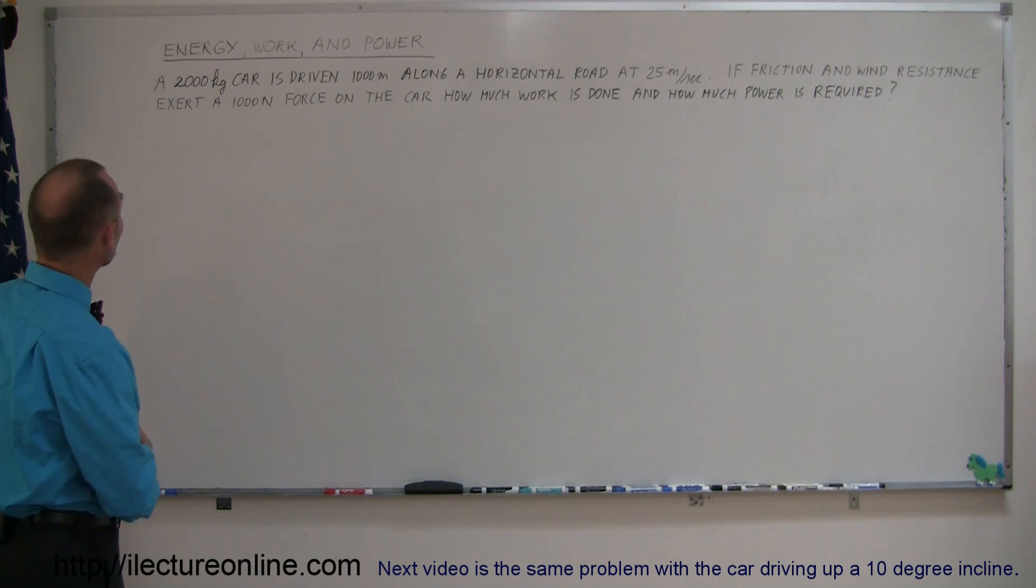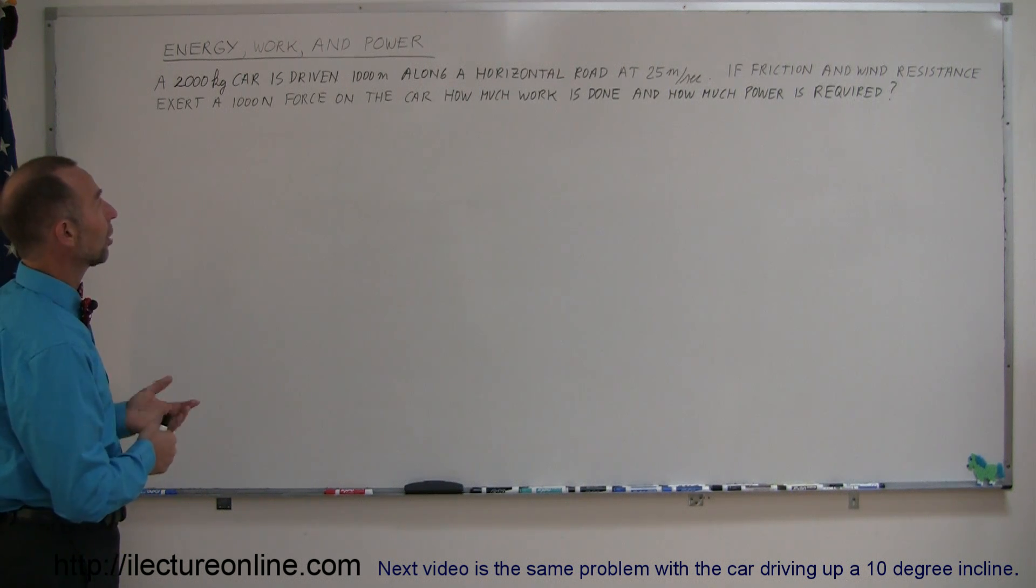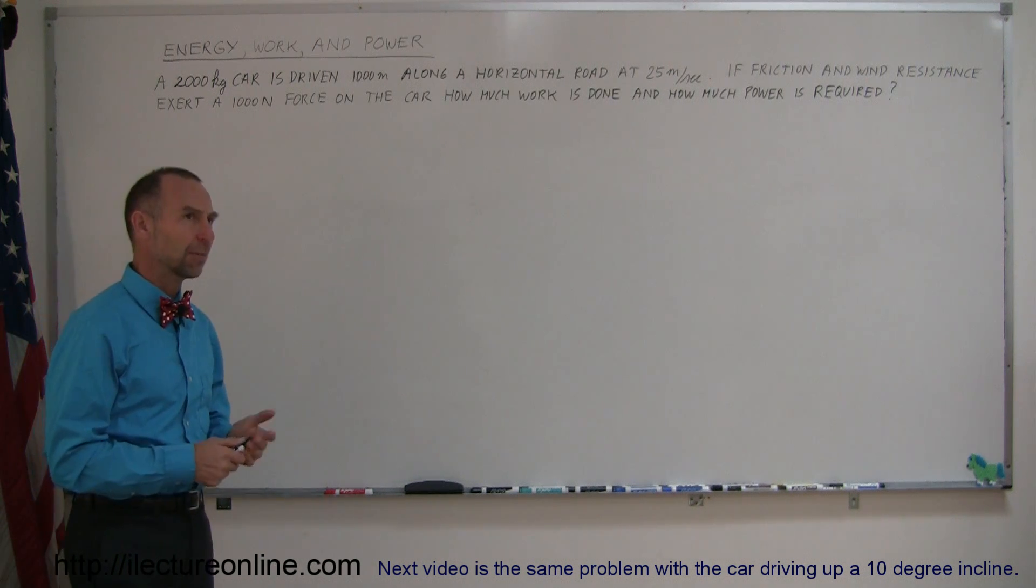And let's read the problem. It says here, a 2,000-kilogram car is driven 1,000 meters along a horizontal road at 25 meters per second. That's probably a little bit more, like 55 miles per hour or so.